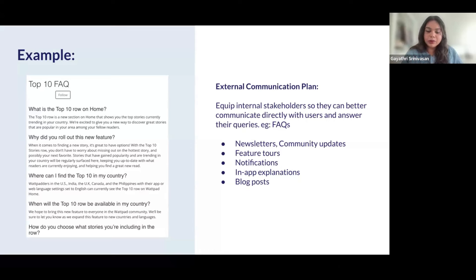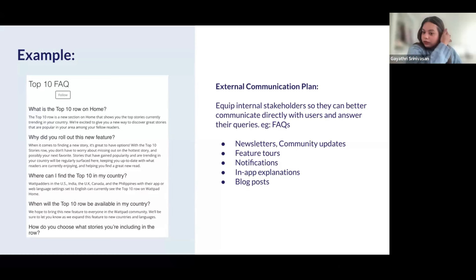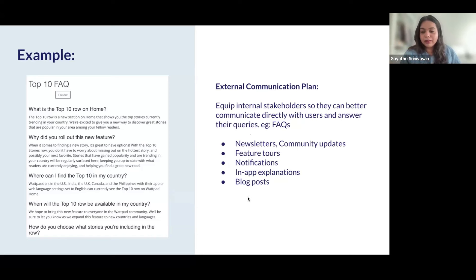All the information generated through the earlier deliverables gets communicated clearly to internal stakeholders, especially non-technical ones. Equipping them enables the creation of user-facing communication plans. For example, a detailed FAQ communicates how the algorithm weights the rank and how fairness ensures everyone can rank in Top 10 as long as certain criteria are met. Other external communication channels include newsletters, feature tooltips, notifications, in-app explanations through explainable design, and company blog posts.